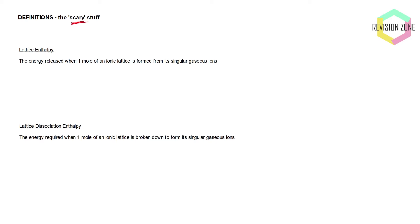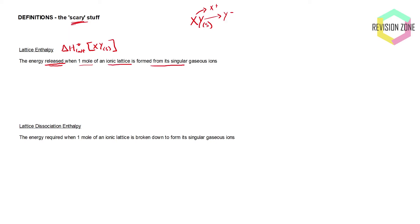In order to construct a Born-Haber Cycle there are some key definitions we need to learn. Students sometimes avoid learning these definitions, but they are really required to get a good understanding of Born-Haber Cycles and the relevant enthalpy changes, and it will make constructing Born-Haber Cycles so much easier. In this particular scenario we are going to be applying these definitions to an ionic lattice or ionic compound of XY, assuming that X is X⁺ and Y is Y⁻. I've only picked this for simplicity. So let's have a look at lattice enthalpy.